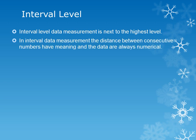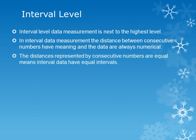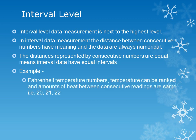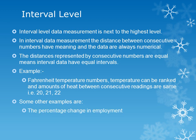Interval level data measurement is next to the highest level. In interval level data measurement, the distance between consecutive numbers has meaning and the data are always numerical. The distances represented by consecutive numbers are equal — meaning interval data have equal intervals. For example, Fahrenheit temperatures can be ranked and the amount of heat between consecutive readings is the same. Some other examples are percentage change in employment, percentage return on a stock, and dollar change in a stock price.